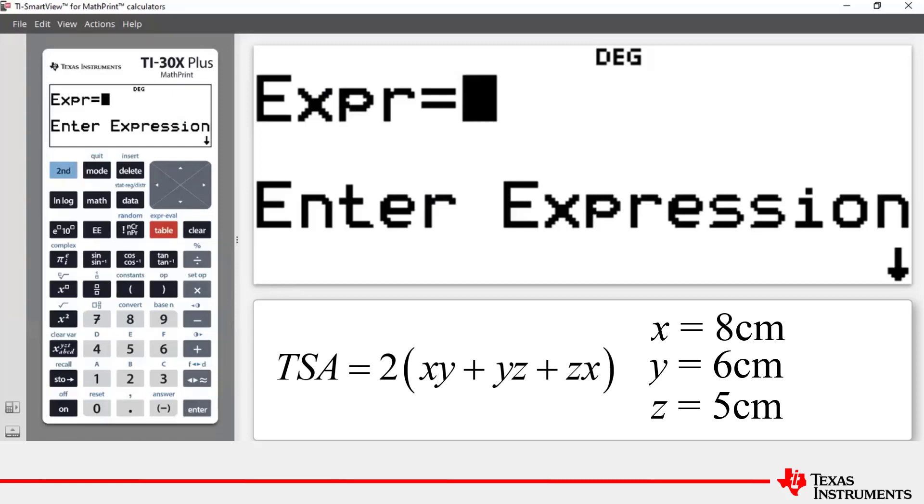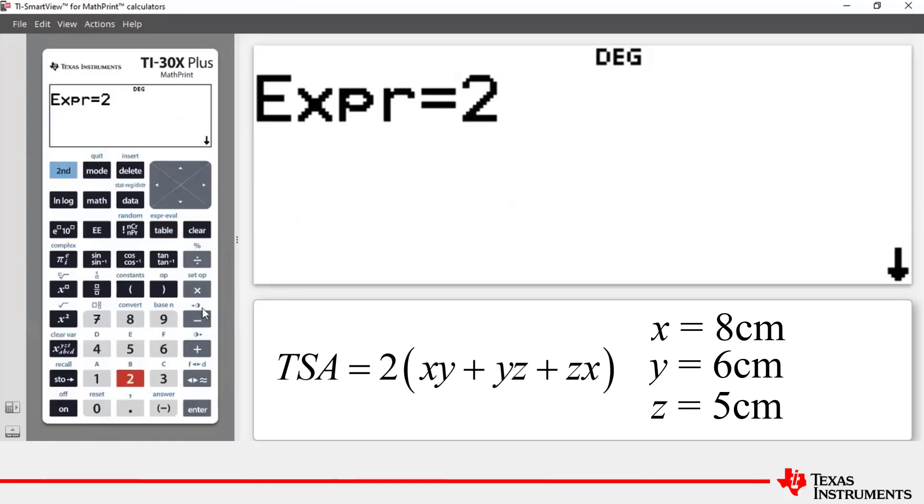So let's enter this formula. It's two multiplied by open bracket. Now to find x, y, and z, we use this variable key over here.